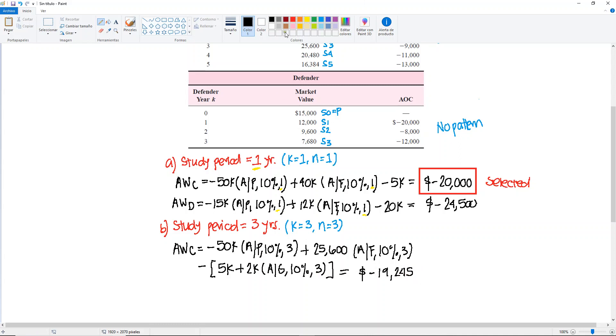And we obtain a result of minus 19,245. So just to highlight our three years. So we have three, we have three, and we have three. We do the same thing for the annual worth of the Defender. It's minus 15,000. Find A given P,